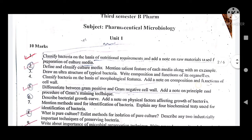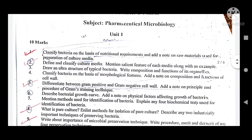The second question: define and classify culture media. You have to define, classify the types of culture media, mention silent features of each media along with an example. Then draw an ultrastructure of a typical bacteria — prokaryotic or eukaryotic — and write the composition and function of its organelles.